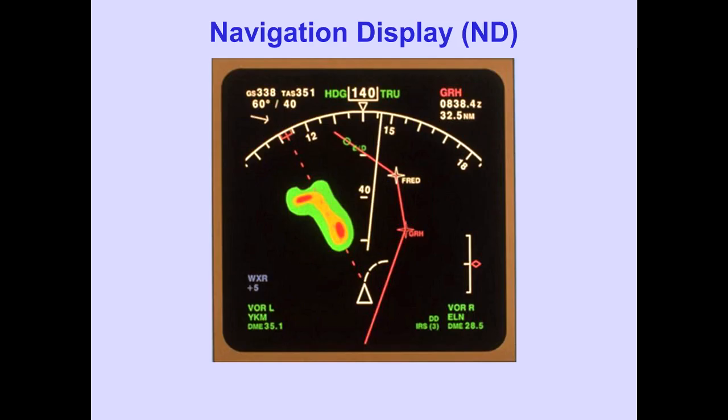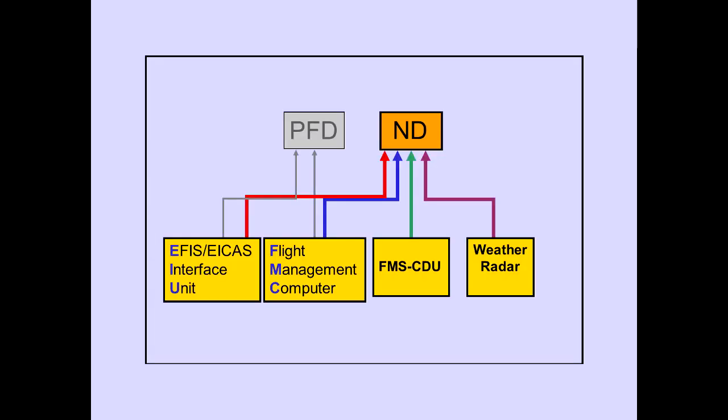Navigation information is shown on the navigation display, or ND. The ND is generated from information received from an EIU, an FMC, and also an FMS-CDU, and the weather radar.